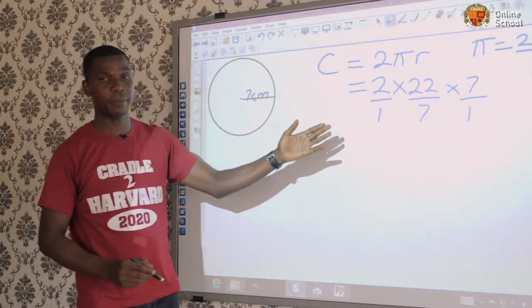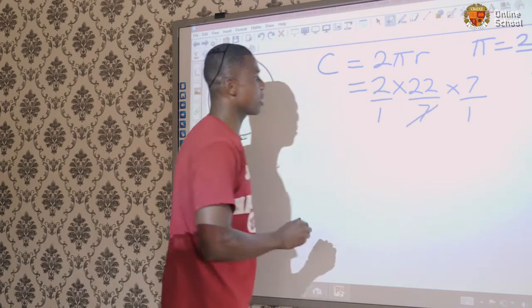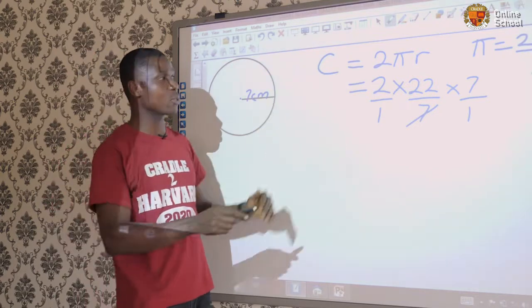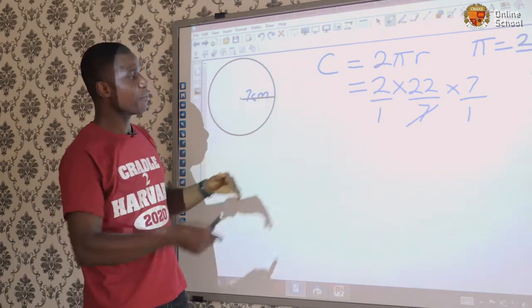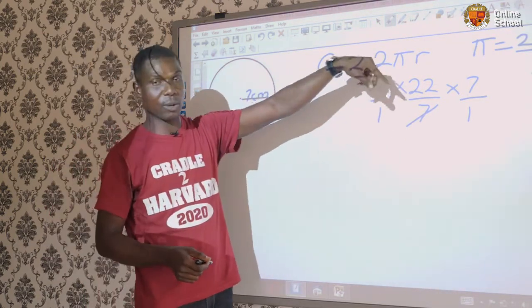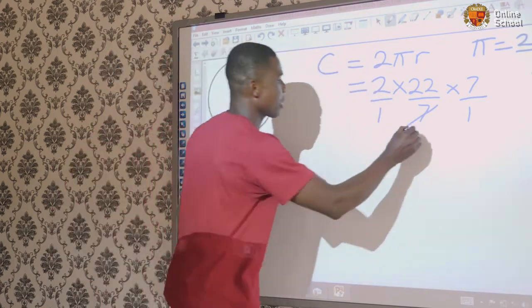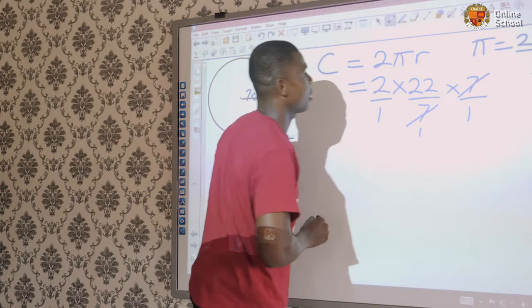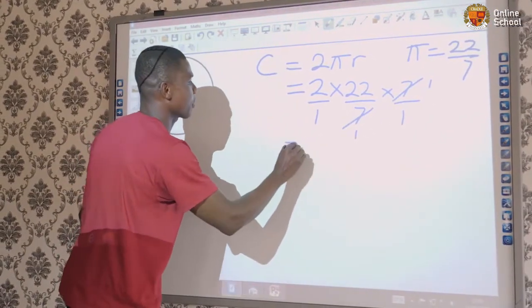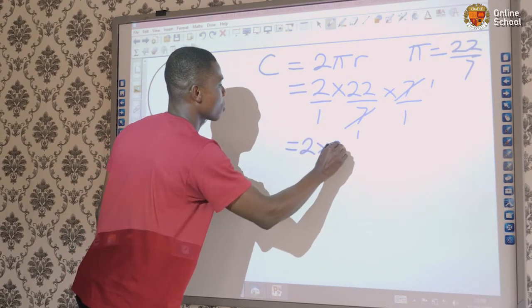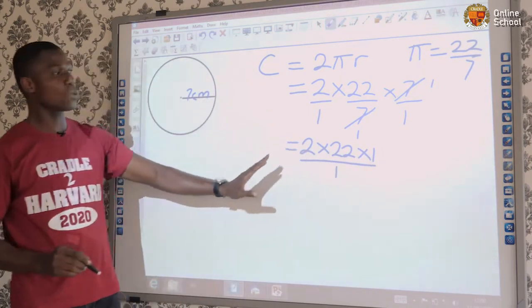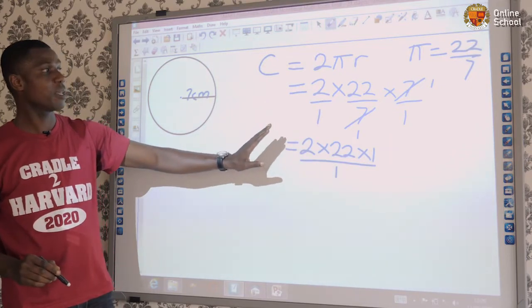Let's continue. 2 times 22 over 7 times what's the value for the radius here? 7. 7 at the denominator will strike off 7 at the numerator. Please don't make a mistake of striking two numbers at the denominator. It must be the value of denominators are in the numerator you are going to find. 7 into 7 is 1. At the numerator, 7 into 7 is 1.